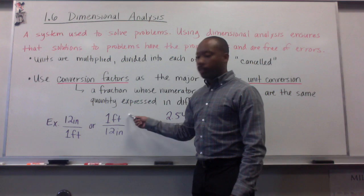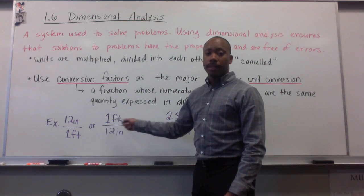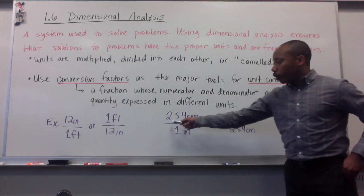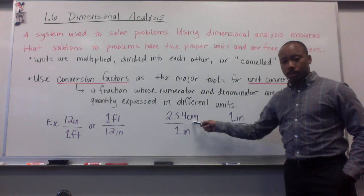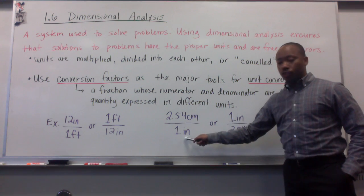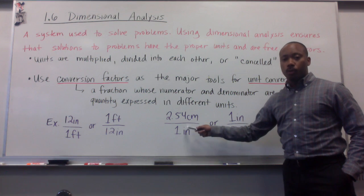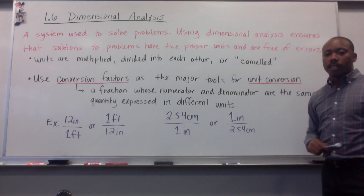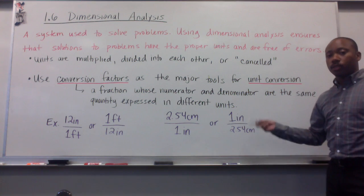I could also write it this way, 1 foot per 12 inches. They mean the same thing. You can flip it either way. Another example is there are 2.54 centimeters per 1 inch. So every 1 inch has 2.54 centimeters. Or you could say 1 inch has 2.54 centimeters, and write it this way.